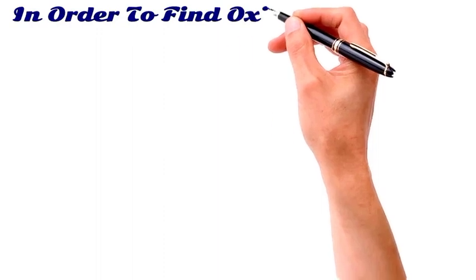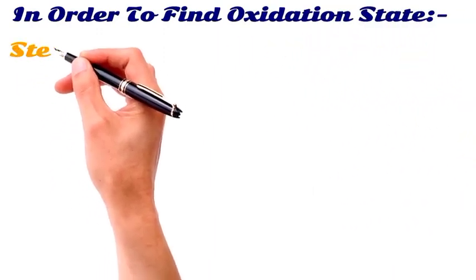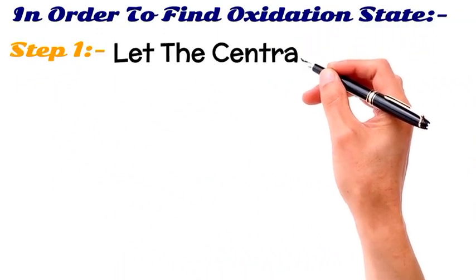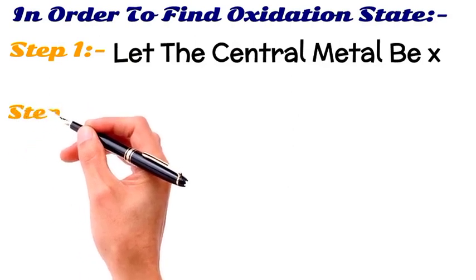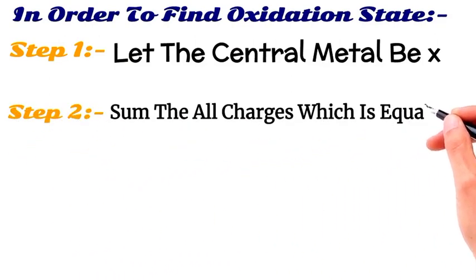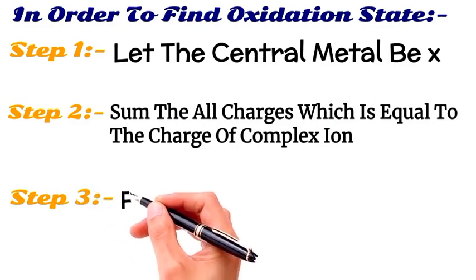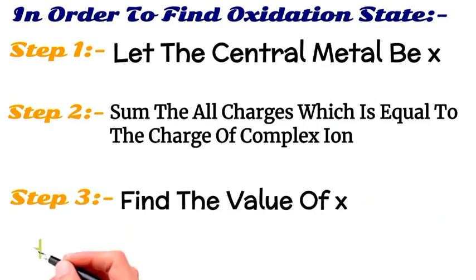To find the oxidation state, the first step is to make the central metal atom equal to x. The second step is to add all the charges of the complex ion, then solve for x.